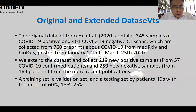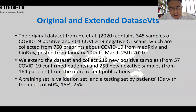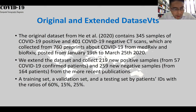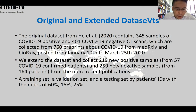We have two datasets involved in this analysis. One is the original dataset that collected 760 preprints from online published papers up to March 25th. The second part of the dataset collected more images from newly appeared publications, and we analyze the two datasets together. We split the dataset into training, validation, and testing sets based on ratios 60, 15, 25.